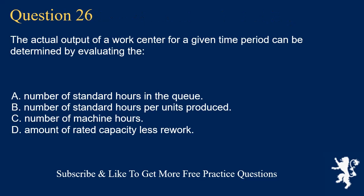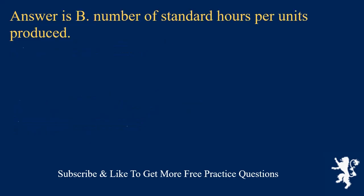Question 26. The actual output of a work center for a given time period can be determined by evaluating the: A. Number of standard hours in the queue. B. Number of standard hours per units produced. C. Number of machine hours. D. Amount of rated capacity less rework. Answer is B. Number of standard hours per units produced.